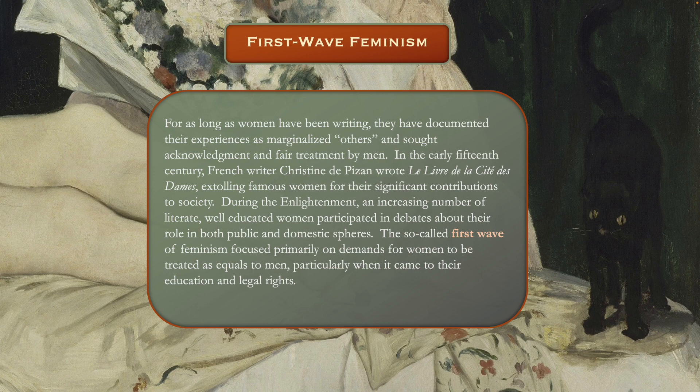During the Enlightenment in the 18th century, an increasing number of highly educated women began participating in debates about women's roles in both the public and domestic sphere. They didn't think of themselves as feminists the way we do now, but this is the beginning of the so-called first wave of feminism. It was focused primarily on demands for women to be treated as equals to men, particularly when it came to education and legal rights, and this wave continued throughout the 19th century and into the early 20th century.